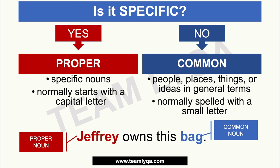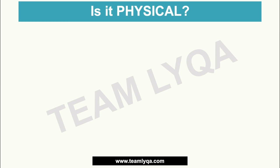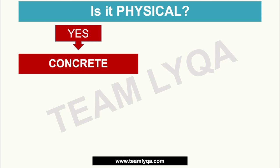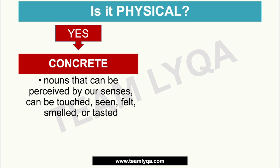The next category is about whether it's physical. The question is: is it physical? Can I see it? Can I touch it? Can I experience it with my senses? If the answer is yes, then it is a concrete noun. Concrete nouns are nouns that can be perceived by our senses — they can be touched, seen, felt, smelled, or tasted. Examples include cups, a window, a bed, a watch. These are concrete nouns because they exist in the physical realm.